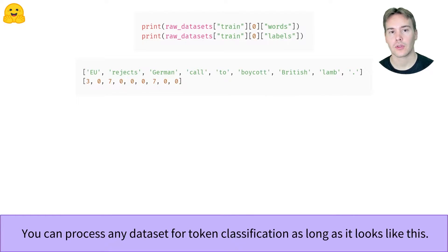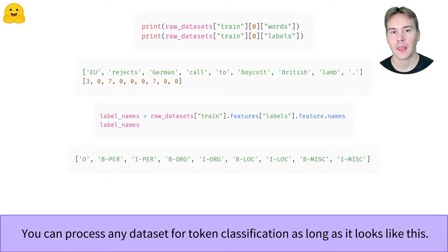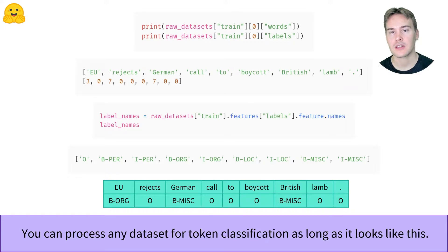If you have your own dataset for token classification, just make sure you clean your data to get to the same point, with one column containing words as list of strings and another containing labels as integers spanning from 0 to your number of labels minus 1. Make sure you have your label names stored somewhere, here we get them from the dataset features, so you're able to map the integers to real labels when inspecting your data.